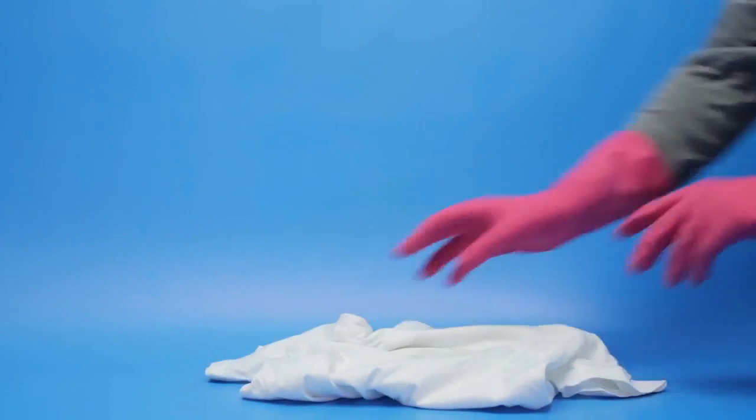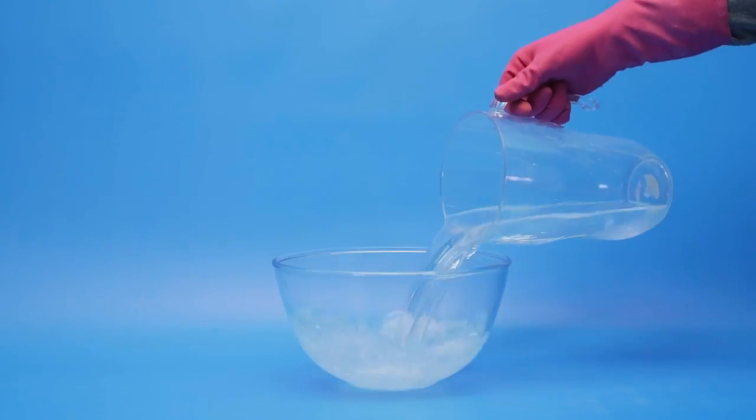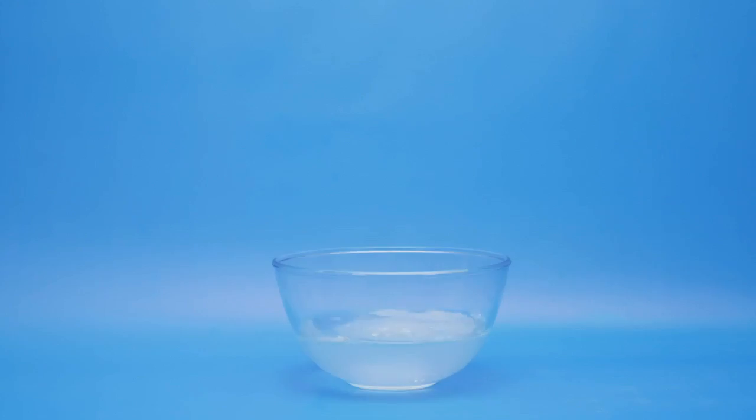Oxygen bleach is best for tackling organic stains on clothing, such as food and drink, grass, dirt and bodily fluids. Be careful not to confuse oxygen bleach with chlorine bleach, which is a more corrosive substance and should be handled with care.